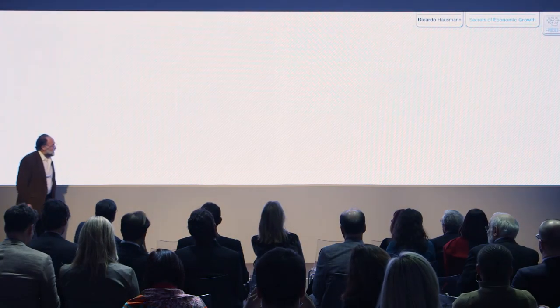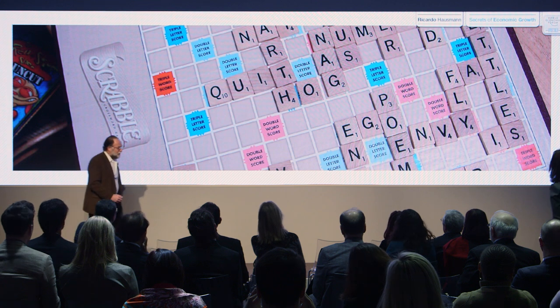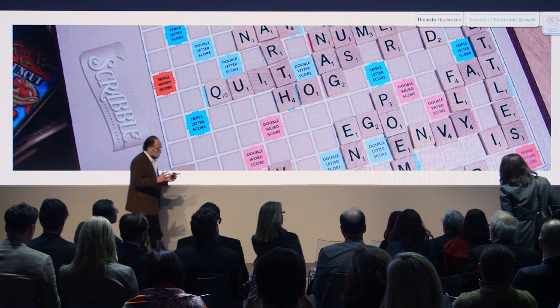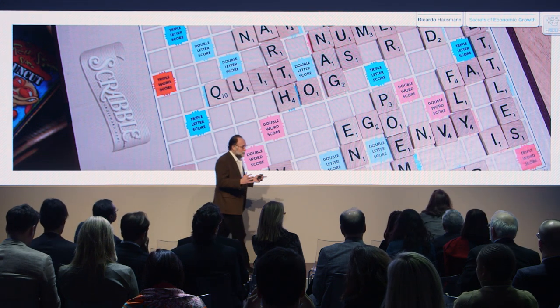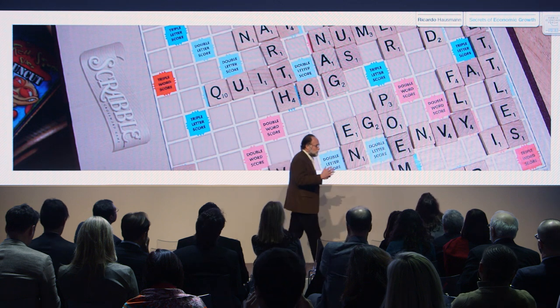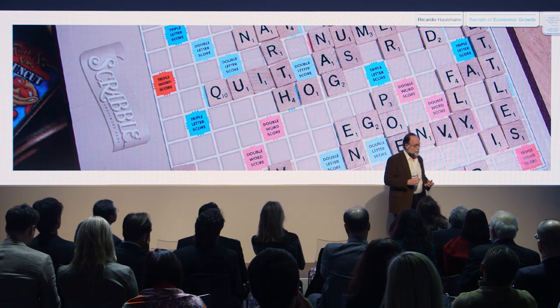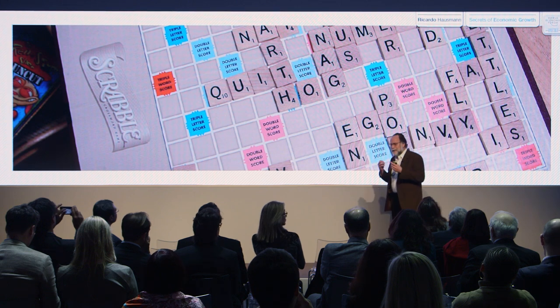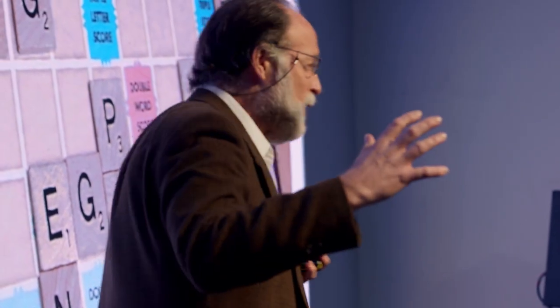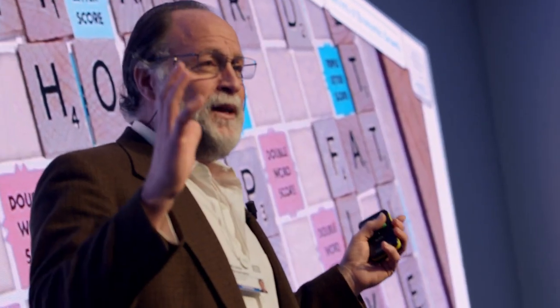I'm going to re-describe this as the game of Scrabble. In Scrabble, you have to make words — you're given letters. Think of words as products, goods or services, and think of letters as bits of know-how. In order to make something, you have to string the bits of know-how together in the same way as you need the different instruments to make the symphony.